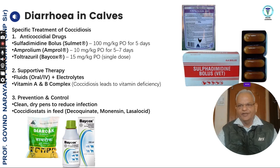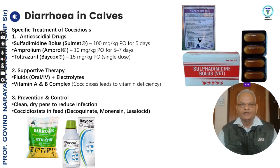One should also use antidiarrheals and probiotics such as neocaolin, lactobacillus powder, or saccharomyces powder available commercially. Diarrhea in calves is generally treated with sulfadimidine tablets. When calves develop coccidiosis, they will have bloody diarrhea and severe dehydration. The recommendations for anti-coccidial drugs are: sulfadimidine 100 mg per kg orally for 5 days.